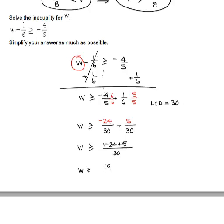24 minus 5 is 19, and because the larger number was negative, the number stays negative over 30. I'm okay here because my w is on the left. I like to have my variable on the left, so this is a good way to end.